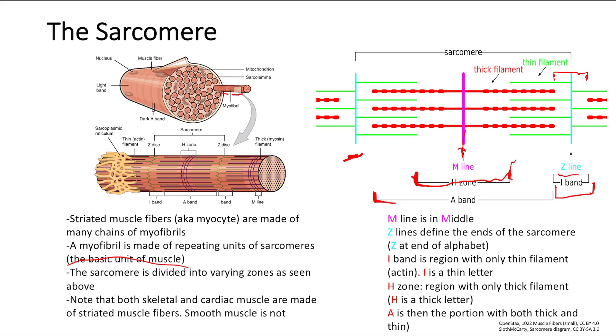And then finally we have the A band, which is the portion with both thick and thin. So it basically covers the whole myosin filament. And it covers both thick filament and thin filament. So if you remember that, then you pretty much know the regions of the sarcomere.